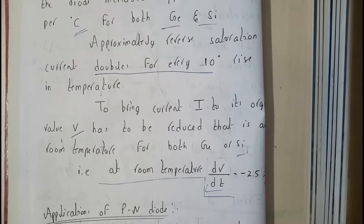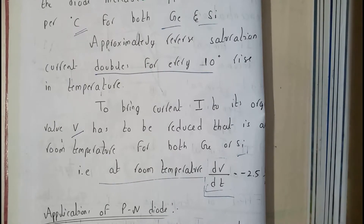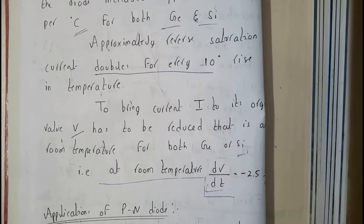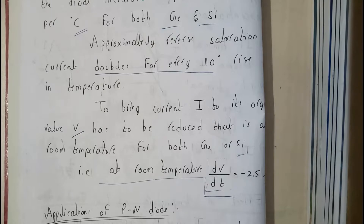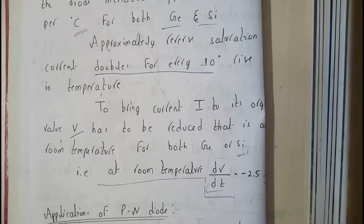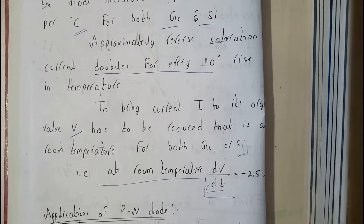I hope everyone got a small idea on this topic that we have discussed. We can conclude that the conductivity changes with respect to temperature. In the next tutorial we will be going through some applications of the P-N junction diode.